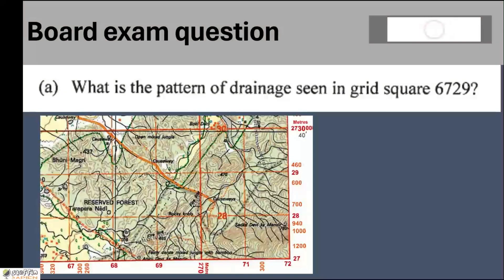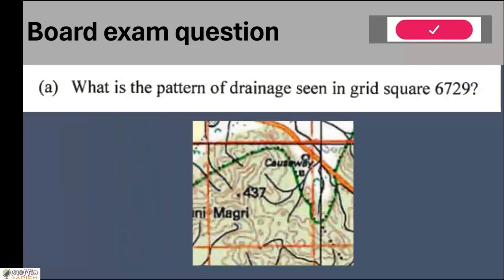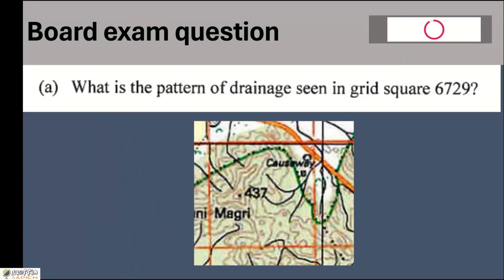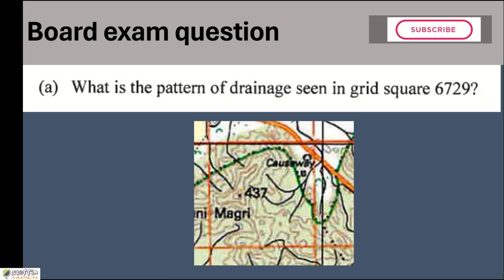The question is: drainage pattern in grid square 6729. We have 6729 in the top left side of the map. When we observe this grid square, we see the presence of a spot height at 437 meters and contours which are somewhat circular in shape — closed contours indicating a hilly area.